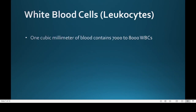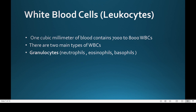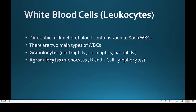White blood cells are colorless because they do not contain any pigment. One cubic millimeter of blood contains 7,000 to 8,000 white blood cells. There are two major types: granulocytes, which have granular cytoplasm, and agranulocytes, which have clear cytoplasm. Granulocytes are further divided into neutrophils, eosinophils, and basophils. Agranulocytes are divided into monocytes and B and T cell lymphocytes.